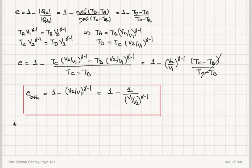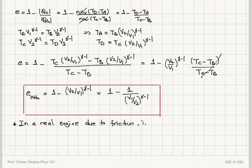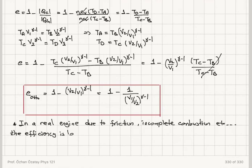I have to give a word of caution here: this is for a reversible engine. In a real engine, due to friction, incomplete combustion, and other non-ideal processes, the efficiency is lowered. So you are calculating the theoretically maximum efficiency obtainable from such a cycle assuming it is reversible. In fact it is irreversible, and the actual efficiency will be lower than this calculated value.